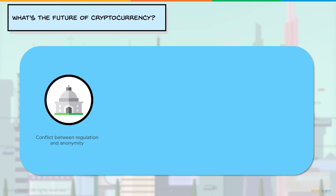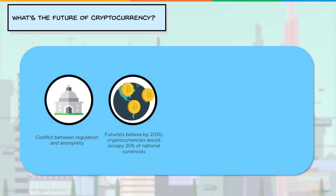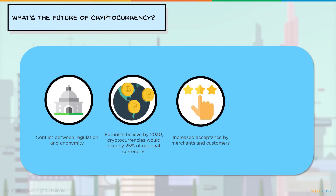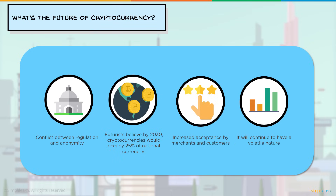What's the future of cryptocurrencies? The world is divided: supporters like Bill Gates, Al Gore, and Richard Branson say cryptocurrencies are better than regular currencies. On the other side, Warren Buffet, Paul Krugman, and Robert Shiller — both Nobel Prize winners in economics — call it a Ponzi scheme and a means for criminal activities. In the future there will be conflict between regulation and anonymity, since several cryptocurrencies have been linked with terrorist attacks. By 2030, cryptocurrencies are predicted to occupy 25% of national currencies. They will be increasingly accepted by merchants and customers, but will continue to have a volatile nature with fluctuating prices.